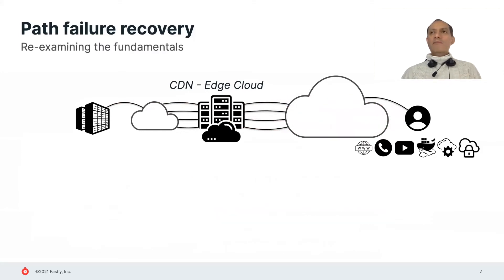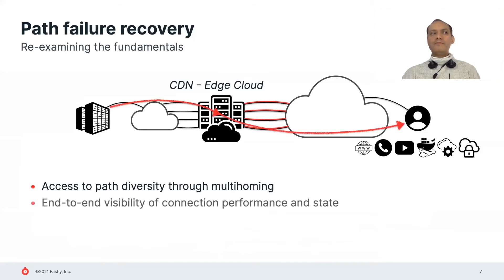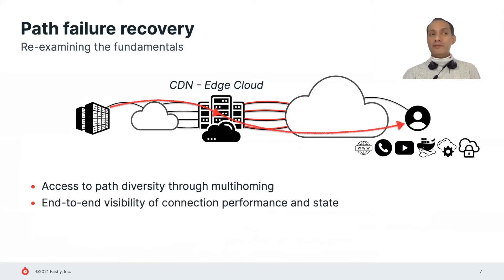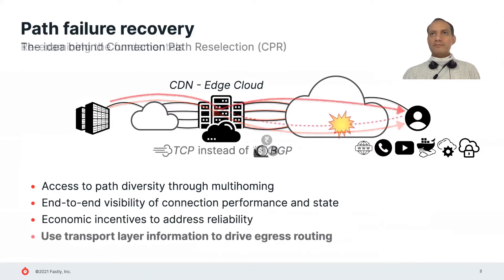The design of CPR places the fundamentals of edge clouds front and center. First, edge cloud points of presence must connect to multiple transits so that they can survive outages of individual providers. Second, since edge clouds terminate user transport connections, they have full visibility of their state and performance. And third, since edge clouds are responsible for delivering their customers' traffic to its users, they have a direct economic incentive to improve service reliability. The solution that presents itself is to use transport layer information to drive egress routing.